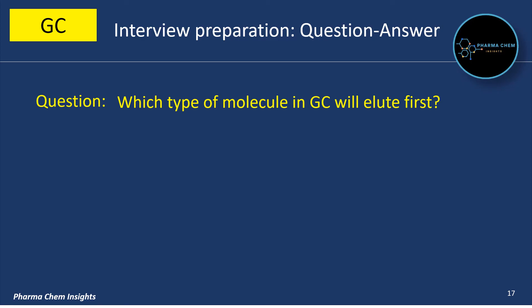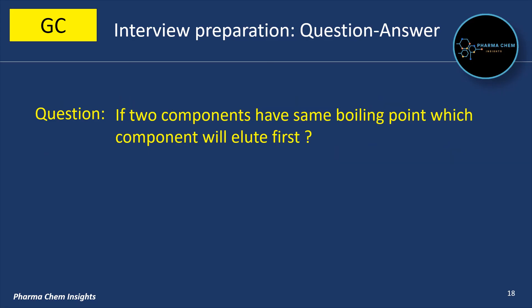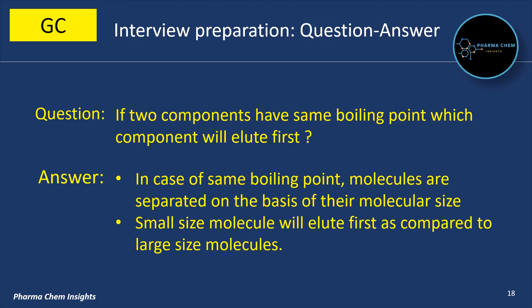Which type of molecule in GC will elute first? The molecule having a low boiling point will elute first. Next question: If two components have the same boiling point, which component will elute first? In the case of the same boiling point, molecules are separated on the basis of their molecular size — the small size molecule will elute first as compared to large size molecules.